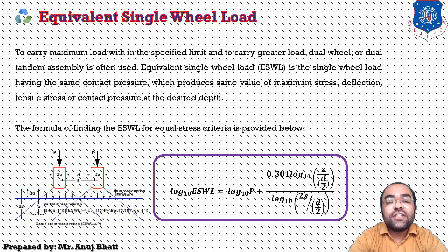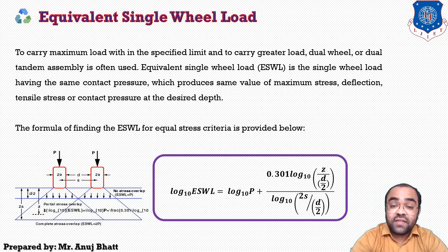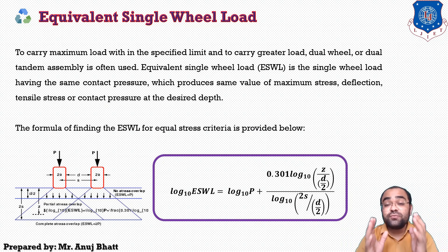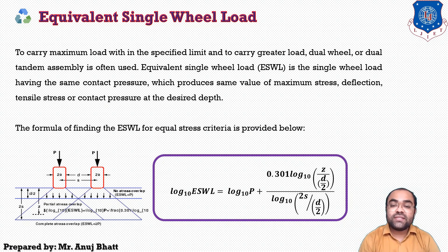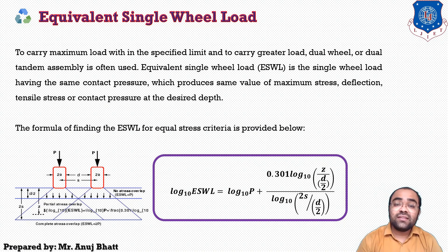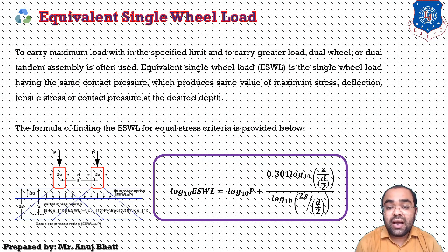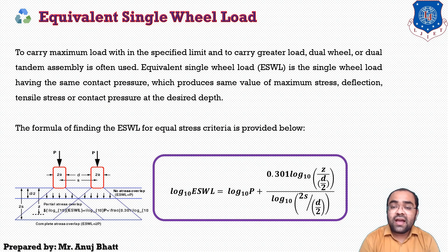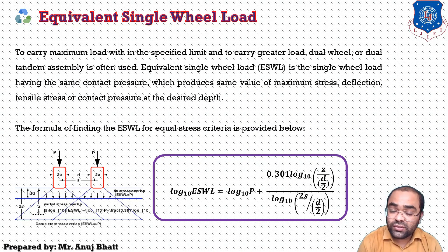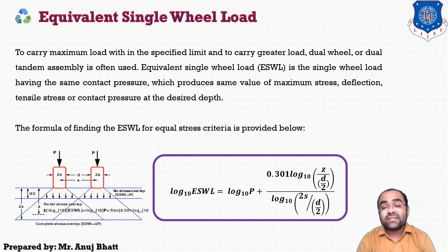The Equivalent Single Wheel Load is the single wheel load that, having the same contact pressure, produces the same value of maximum stress, deflection, tensile stress, or contact pressure at the desired depth. The procedure for finding the ESWL for equal stress criteria uses a formula derived from certain assumptions.